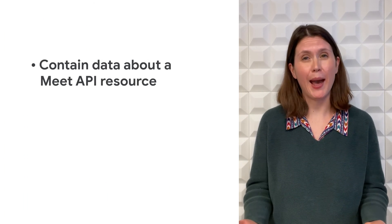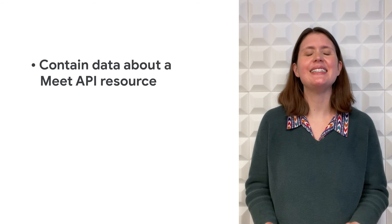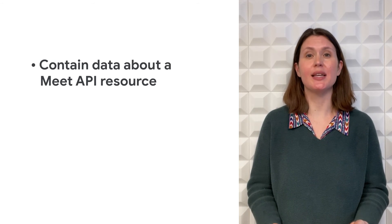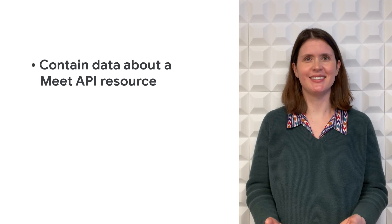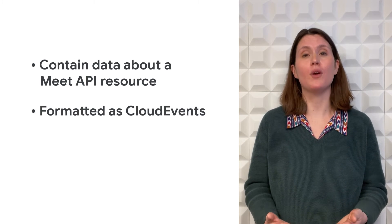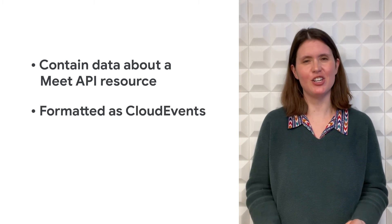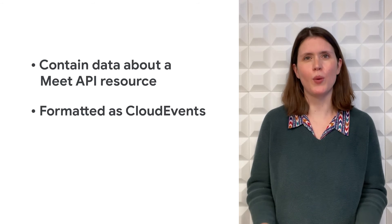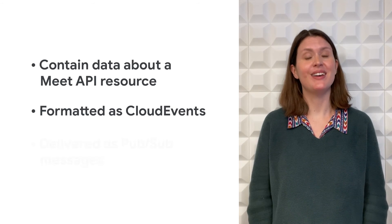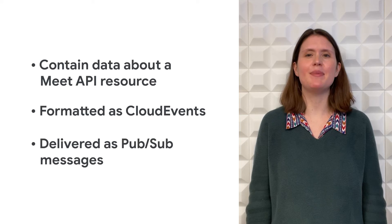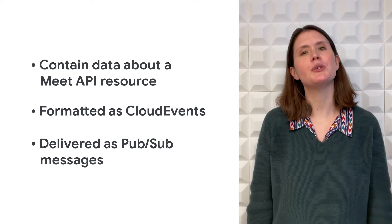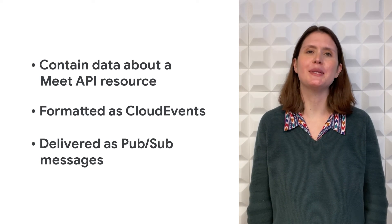So what do events look like and how does your app receive them? To tell your app more about what happened in Meet, events contain data about the Meet API resource that was created, updated, or deleted. Events use a standard format that follows the Cloud Event specification, which is an industry standard way of describing event data. Finally, the Google Workspace Events API delivers these events to your subscription as Google Cloud Pub/Sub messages. With all that in mind, let's look at an example to see what an event would look like.